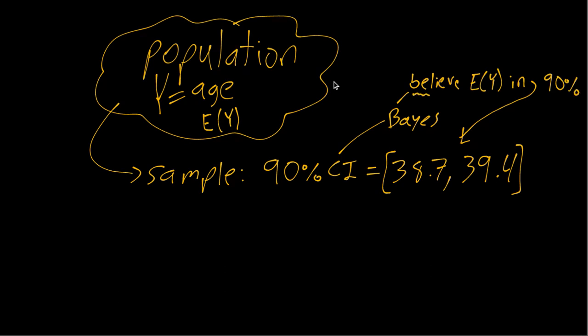And here believe is this posterior belief that's a combination of your prior beliefs and what you see in the data. So it's given this particular data sample and given my prior beliefs, this is what I believe about the true population mean.